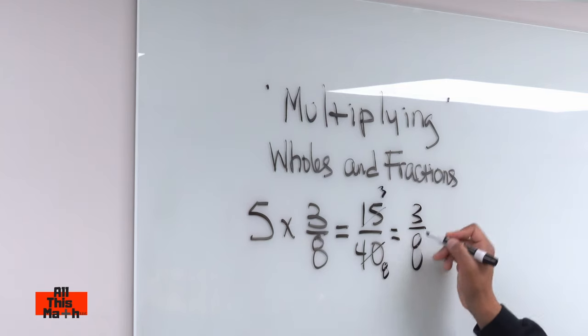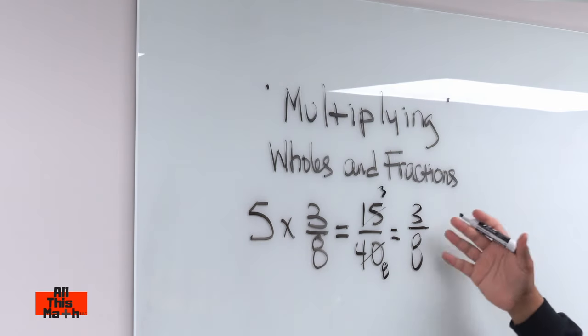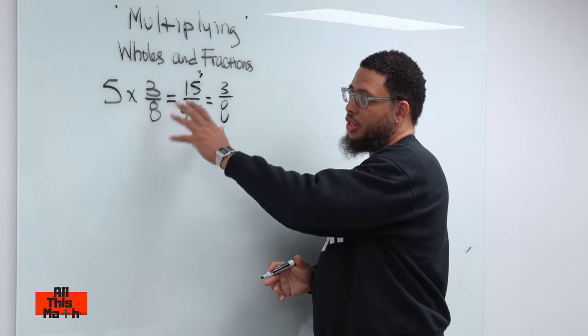So let's think about this logically because math is all about logic. How can I do five times three eighths and still end up with three eighths? That's ridiculous. That can't happen. So this is proof that doing it this way is incorrect.